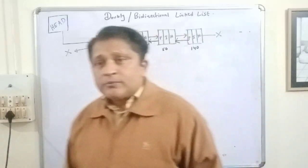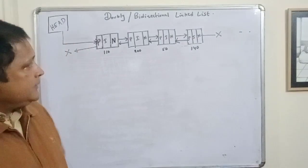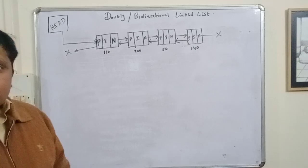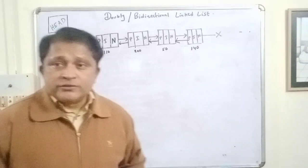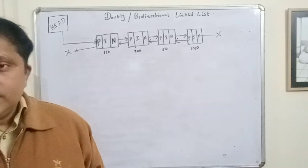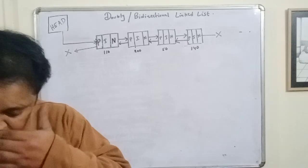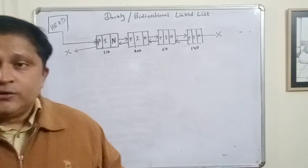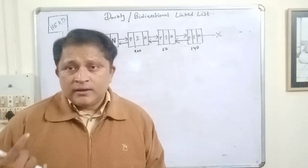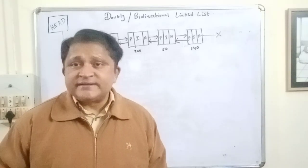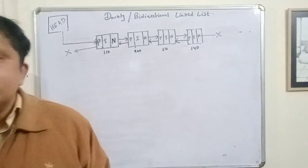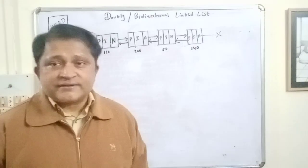This is a doubly or bi-directional linked list. Now we are going to discuss the insertion operation. The first and simplest algorithm of insertion is inserting any node at the beginning of the list.